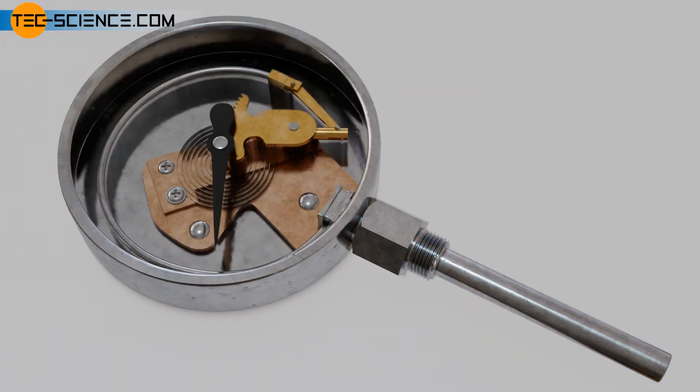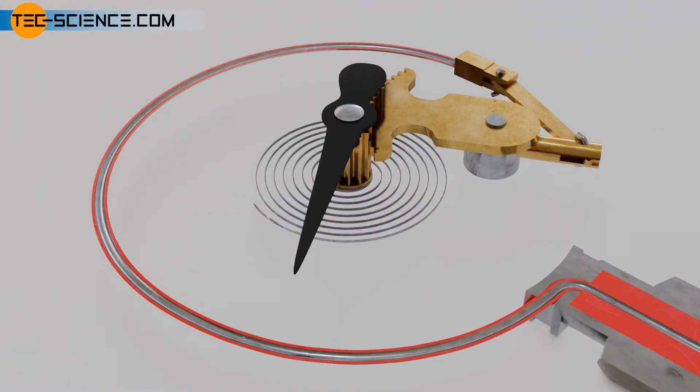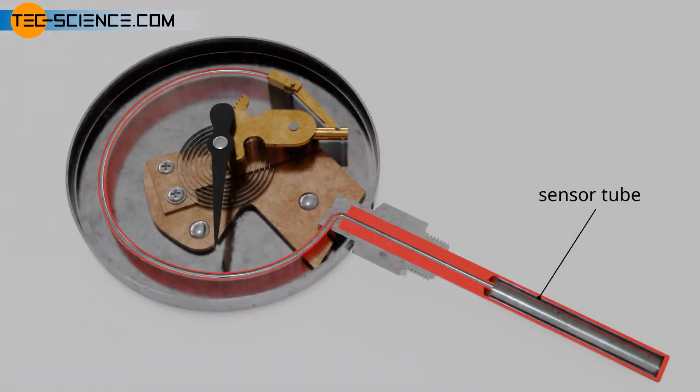The operating principle of a gas-filled thermometer is based on the use of a Borden tube. In principle, this is a C-shaped tube in which an inert gas such as nitrogen, helium, or argon is under high pressure. The Borden tube is connected to a bulb as the actual measuring probe. The entire system is sealed gas-tight on all sides.